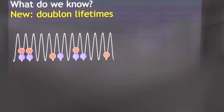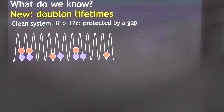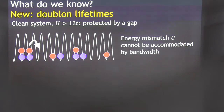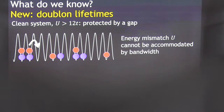Let me talk about what people have seen in the clean limit first. In a clean limit in a lattice, you can have doublecons — doubly occupied sites. What we know from various measurements — not our measurements but from measurements going back many years — is that in this clean system, when U is bigger than 12T, the decay of these doublecons is protected by a gap, or they are repulsively bound. The reason is that you can't unbind one of these doublecons because there's an energy mismatch: the interaction energy you have to give up if you take one of these particles and put it on the site next to it is bigger than the bandwidth, and there's no simple way to accommodate that energy. Energy and momentum conservation is, from first look, kind of impossible.